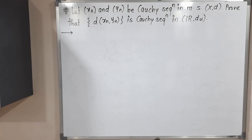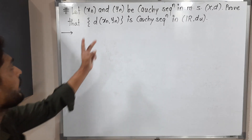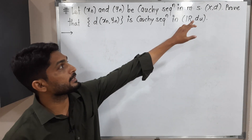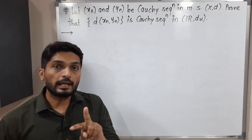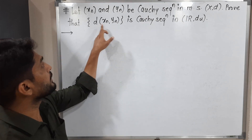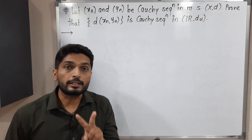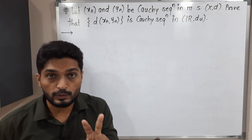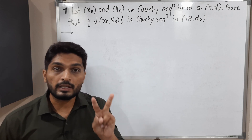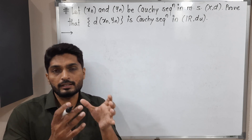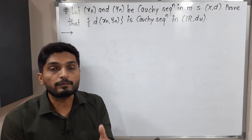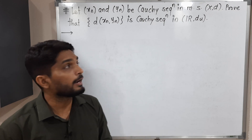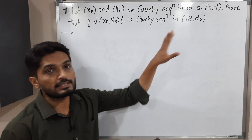Let us discuss this example. We have two Cauchy sequences xn and yn, both Cauchy in a metric space (X, d). With the help of xn and yn, a new sequence is formed: d(xn, yn), giving the distance between xn and yn — that is, d(x1,y1), d(x2,y2), d(x3,y3), and so on. This is a sequence of real numbers and we have to prove it is a Cauchy sequence in R.